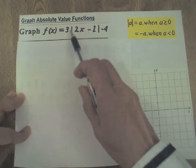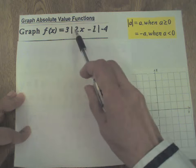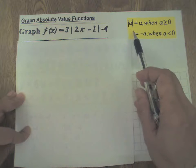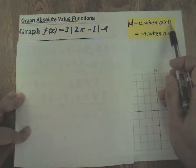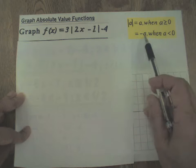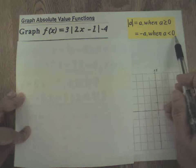Absolute value of a is equal to a when a is greater than or equal to 0, and it is equal to negative a when a is less than 0.